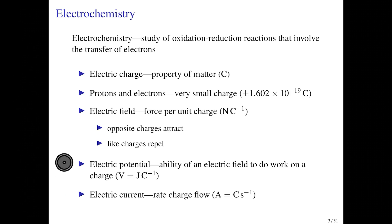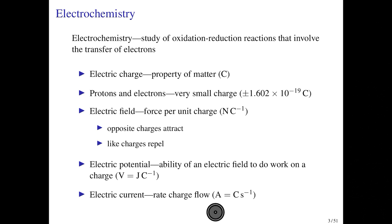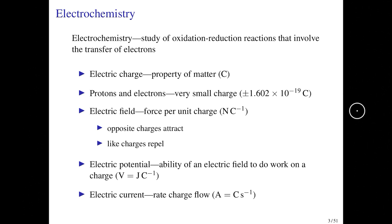We'll make use of voltage later as we discuss electrochemical cells. At the very end of the chapter, we're going to discuss electric current, which refers to the rate of charge flow through a circuit. Electric current is measured in units of amperes, which are coulombs per second. This will come up at the end of the chapter.